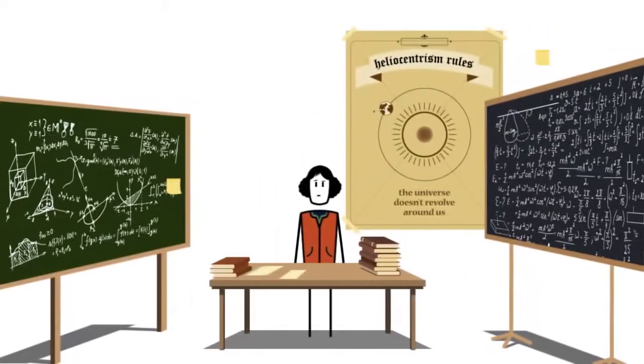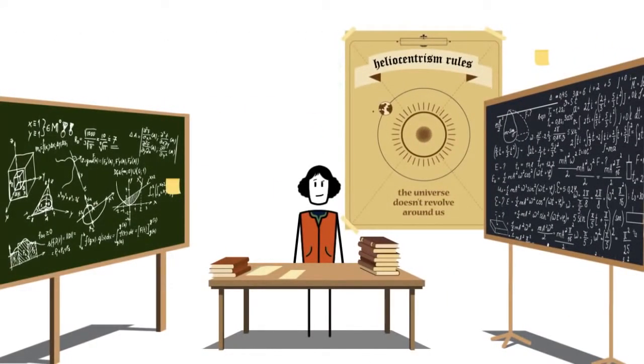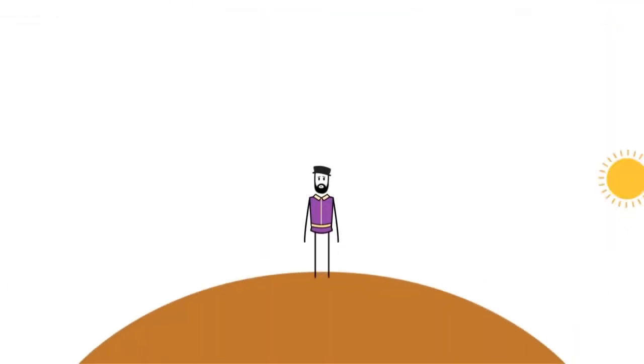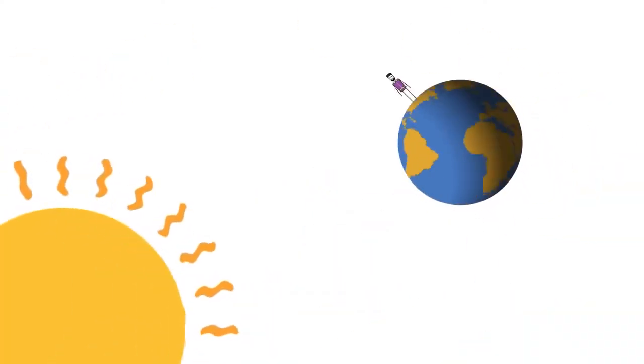Galileo's discoveries confirmed the heliocentric model first put forward by Polish mathematician and astronomer Nicholas Copernicus, which argued that despite appearances, the Sun neither rises nor sets. It is the Earth that is orbiting the Sun.